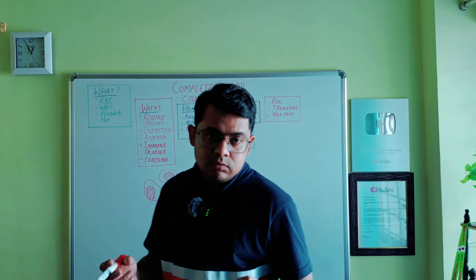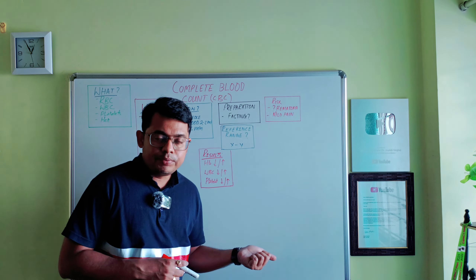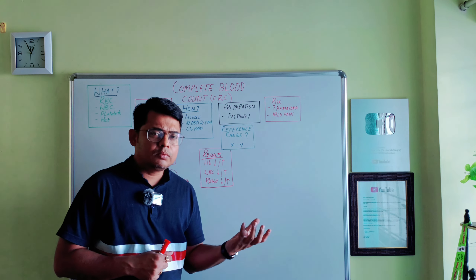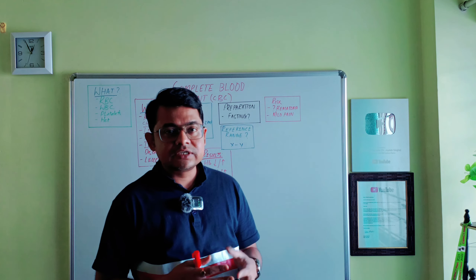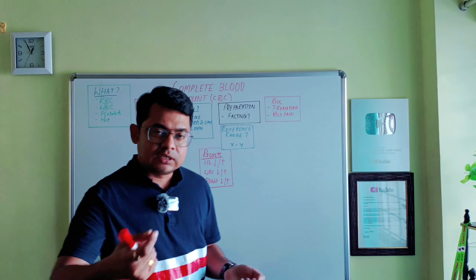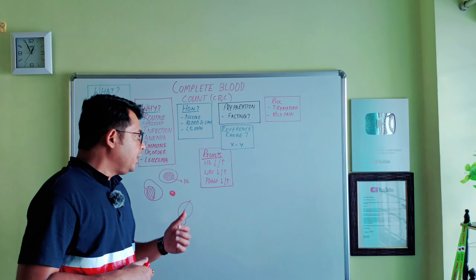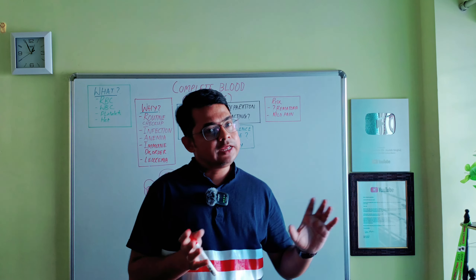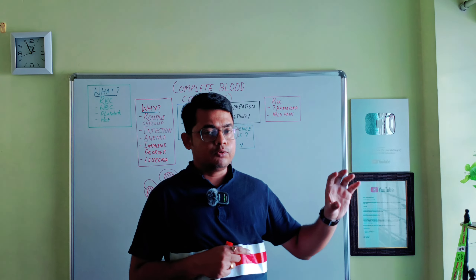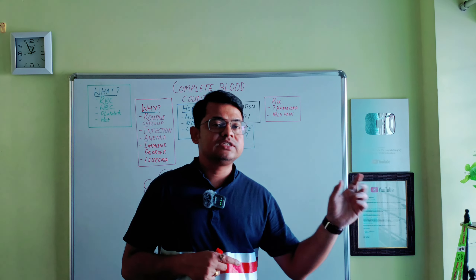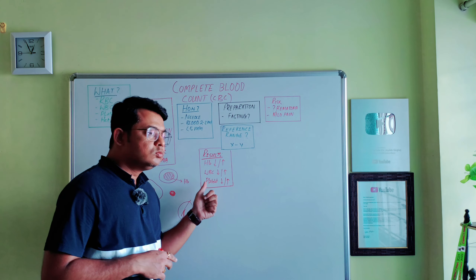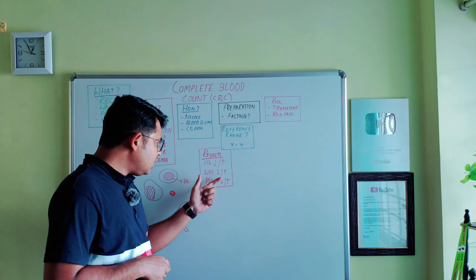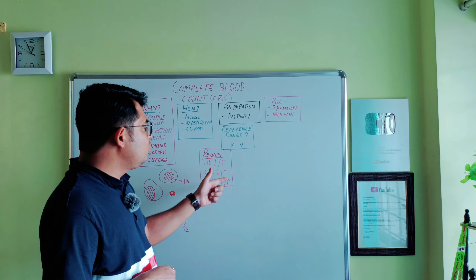If hemoglobin is high, it is normally seen in people living at higher altitudes, in smokers, in some tumors or cancers such as kidney cancer that trigger a secondary response, and in polycythemia vera — a primary blood cancer that leads to high hemoglobin.